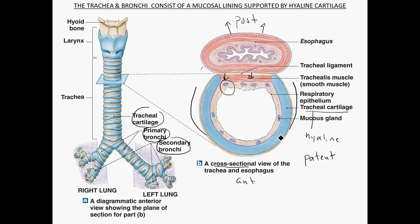These cartilage rings help hold open — or keep patent — the airway. Without them, the airways would collapse. There is air inside with internal air pressure, but when you exhale, that pressure drops and external chest pressure would collapse the airway — which you definitely do not want. So these C-shaped rings of cartilage hold those airways wide open.